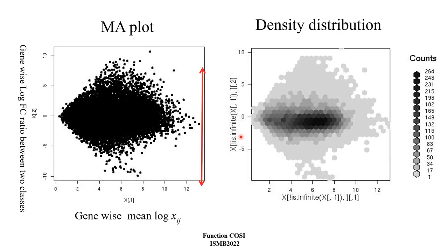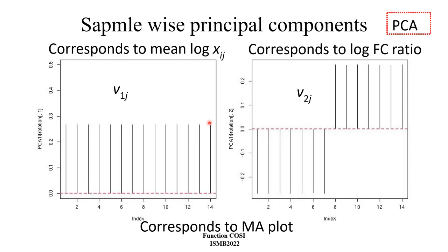The MAQC data looks like this. The density distribution showed that some genes are common, but some are different among the samples. We applied principal component analysis to the data and looked at the sample-dependent vectors V1 and V2. V1 is the mean vector with no differences among the samples, and V2 is the vector with differences among the samples, like this.